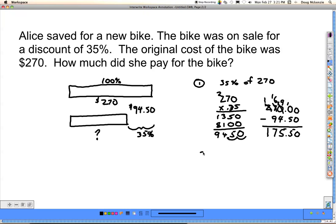Method number two. Going back to our original problem here, if I know that if 35% is taken away, the percent that's left is going to be 65%.